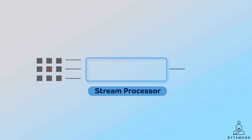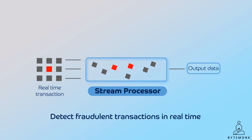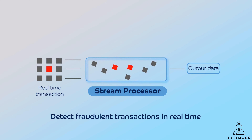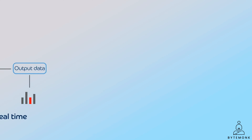A bank may use a stream processor to detect fraudulent transactions in real-time. The stream processor ingests data from the bank's payment processing system, which generates events for each transaction. It then processes the data to identify suspicious transactions based on factors such as the amount, the location, and the type of goods or services being purchased. If a suspicious transaction is identified, it outputs the transaction to a dashboard where it can be reviewed by a fraud analyst.